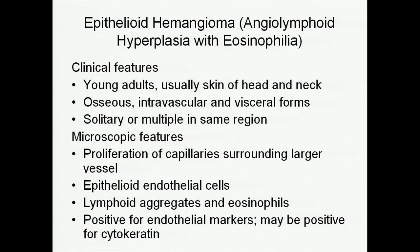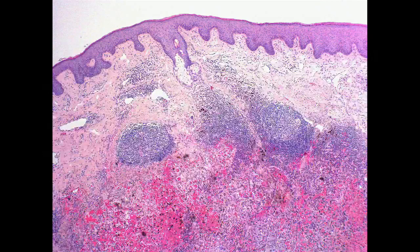Microscopically, you see a proliferation of capillaries, often surrounding a larger damaged vessel at the base of the lesion, and these capillaries are lined by epithelioid endothelial cells. You frequently see lymphoid aggregates with admixed eosinophils, but you don't always see those features. They're positive for endothelial markers by immunohistochemistry, but the pitfall — which applies to essentially any epithelioid vascular neoplasm — is that it can sometimes be positive for cytokeratin.